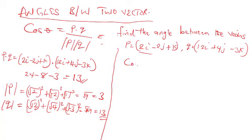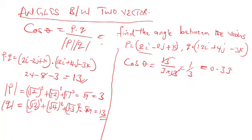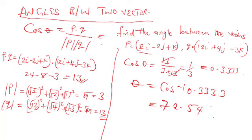Now going back to our formula for the angle between vectors: cos theta equals the dot product over the product of the absolute values, which is 13 over (3 times 13). The 13s cancel, giving us 1 over 3, equal to 0.33333. Therefore theta equals cos inverse of 0.33333, which gives 72.54 degrees. So the angle between these two vectors is 72.54 degrees.